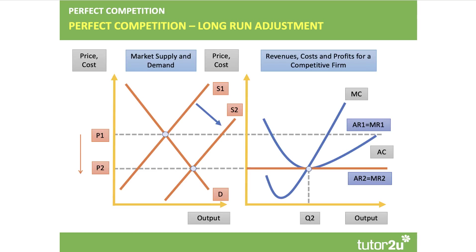The entry of new firms causes an outward shift of supply which drives the market price down to P2, and for this representative firm — one of many in perfect competition — price P2 is just sufficient at output Q2 to make normal profit. Price equals average cost at that output level, and price also equals marginal cost at output Q2.